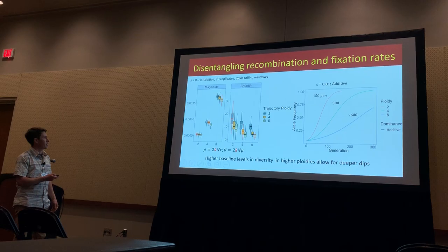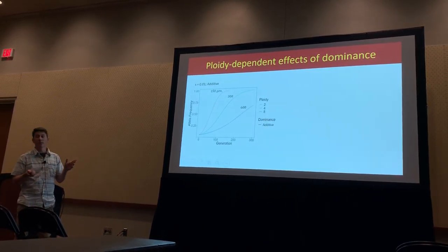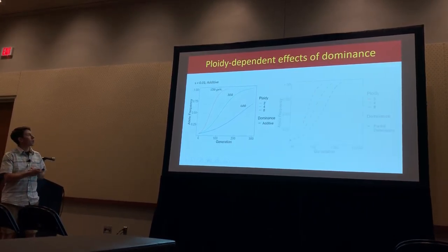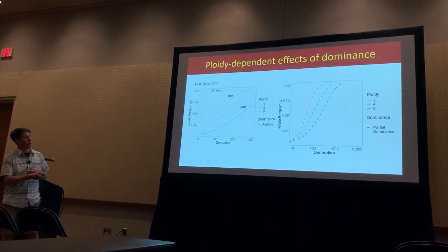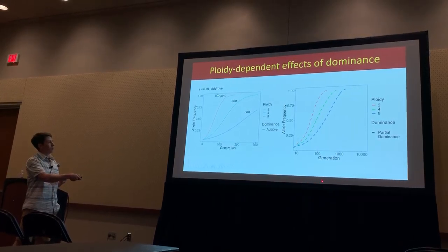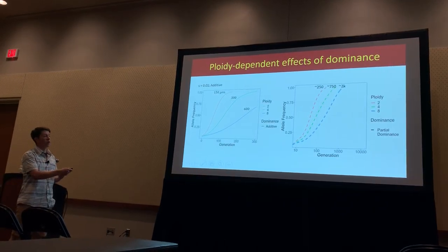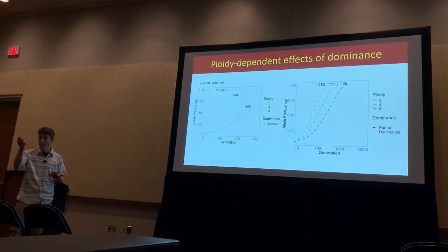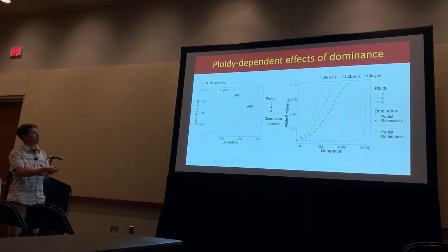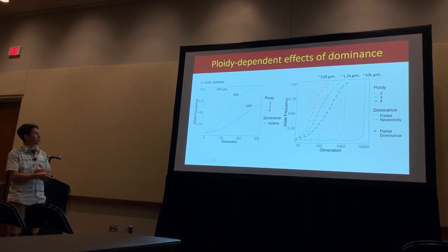So: higher baseline levels drive magnitude, and faster fixation drives breadth of signal. When it comes to partial dominance and partial recessive mutations — switching to a log scale — for partial dominance, instead of a factor of two, you get about a factor of three in fixation time. For recessive mutations, it's much more exaggerated: you get about a factor of ten in expected fixation times as we increase ploidy.